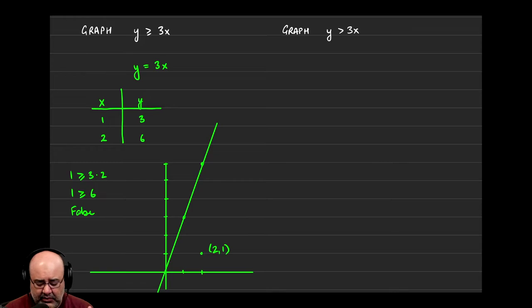Now, just like we did in the previous video, do you run towards people that tell you the truth, or do you run away from people that tell you lies? So you run towards people that tell you the truth, and you run away from people that lie to you. Is the point 2, 1 telling us the truth with regards to this inequality? Is it satisfying it, or is it telling us some nonsense that we should be running away from?